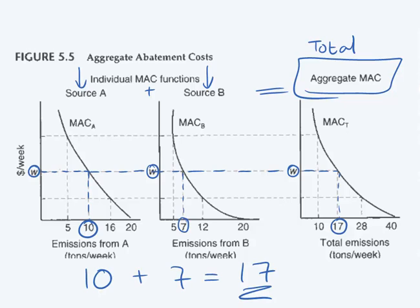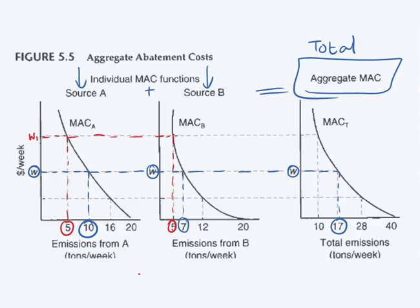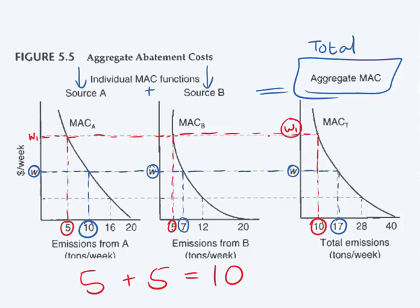I'm just going to do one or two more cost points to show you how we add it up. For instance, let's take one that hasn't been named, let's call it W1. At a cost of W1, Source A is able to go down to 5 emissions a week. At a cleanup cost of W1, Source B is able to go down to 5 emissions a week. So that's 5 plus 5, giving me a total of 10 emissions a week. At a price of W1, my total market can go down to 10 emissions a week.